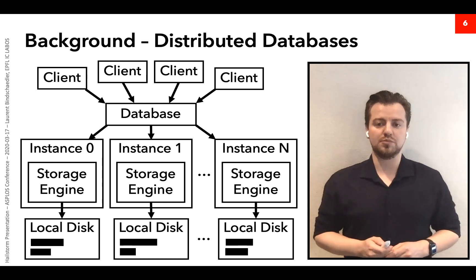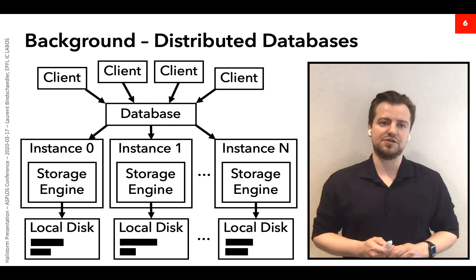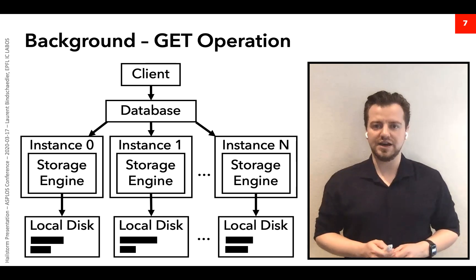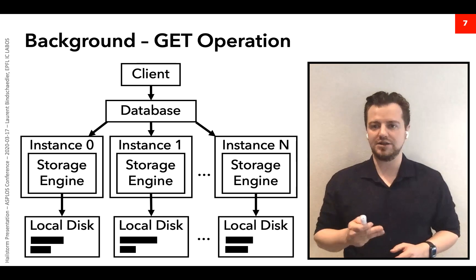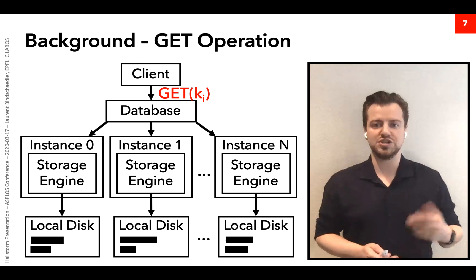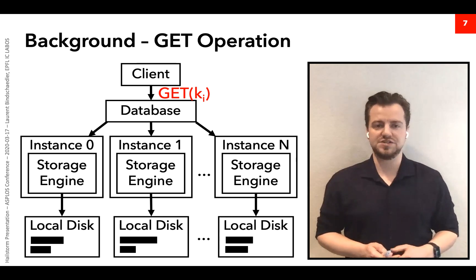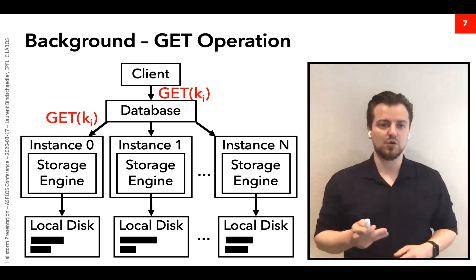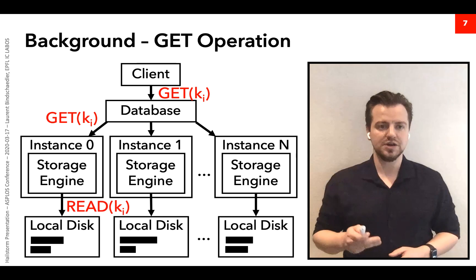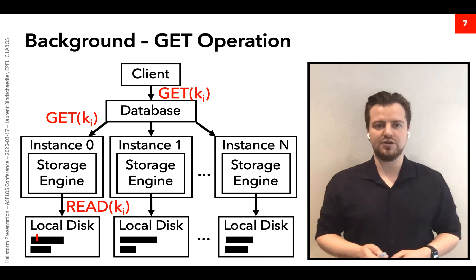Databases support multiple operations. The first is a single key read, or get operation. The client asks the database to get a value associated with a particular key ki. The database knows which instance is responsible for the partition associated with that key and forwards the request there — here, instance zero — which uses its storage engine to read the data from disk and return the value.